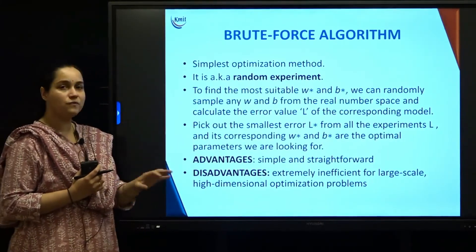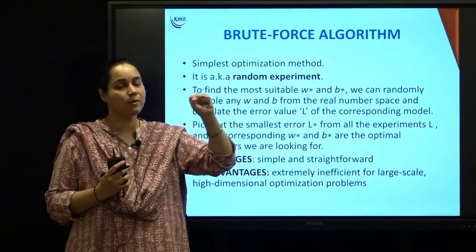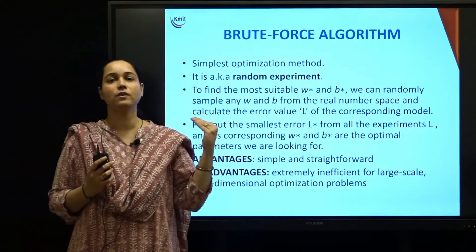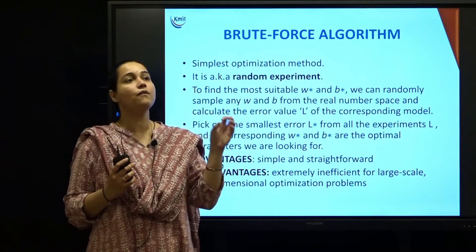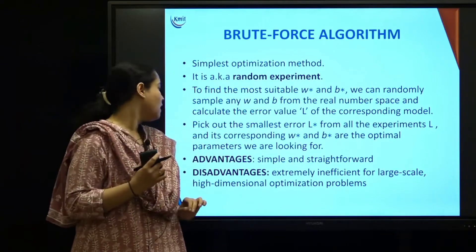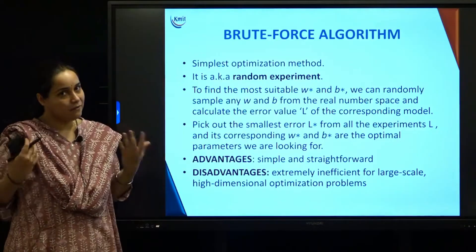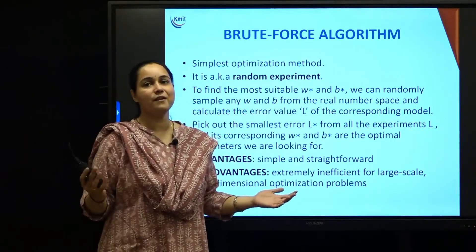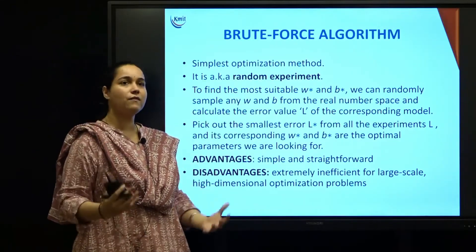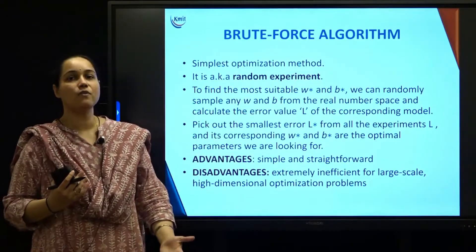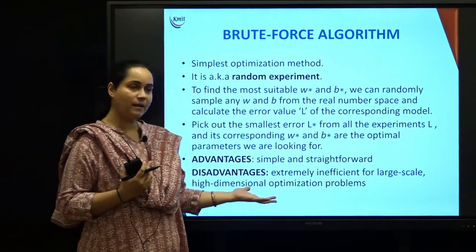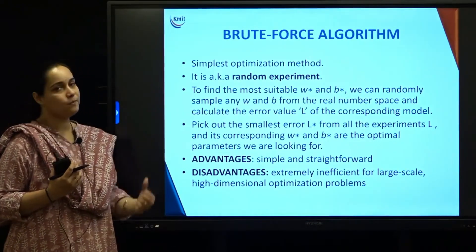The advantages of brute force algorithm: it is very simple and straightforward. From the real number sample space, you pick values of W and B, calculate L for all these values, sort for the minimum value of L, and call those W and B values optimal parameters W* and B*. The disadvantage is that it is very inefficient when you have a large amount of high-dimensional data, since calculating W and B for all values and finding the least L is quite a long process — it is extremely inefficient for large-scale, high-dimensional optimization problems.